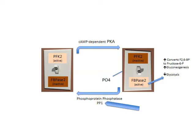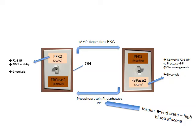To drive it the other way and increase PP1 activity — flipping the switch to the OH position — the hormone insulin is used. Insulin is released by pancreatic beta cells during the fed state when blood glucose is high.